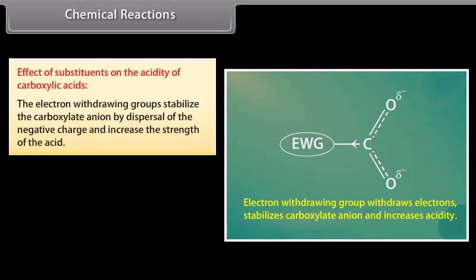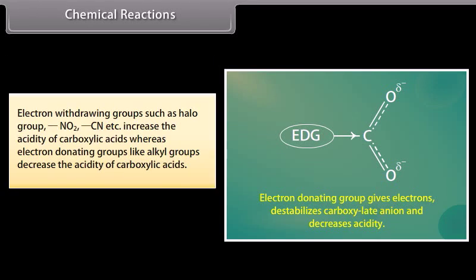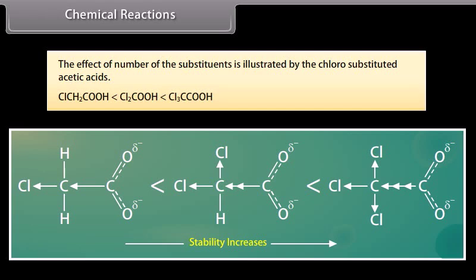Effect of substituents on the acidity of carboxylic acids: electron-withdrawing groups stabilize the carboxylate ion by dispersal of the negative charge and increase the strength of the acid. On the other hand, electron-donating groups cause concentration of negative charge, destabilize the carboxylate anion and hence decrease the strength of the acid. Electron-withdrawing groups such as halo groups, NO2, CN, etc. increase the acidity of carboxylic acids, whereas electron-donating groups like alkyl groups decrease the acidity. The acid strength increases from chloroacetic acid to trichloroacetic acid.